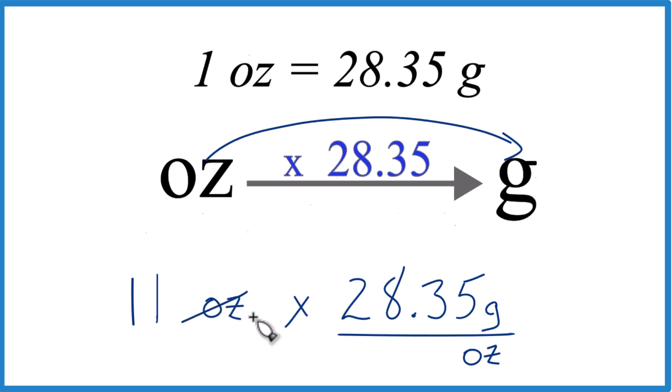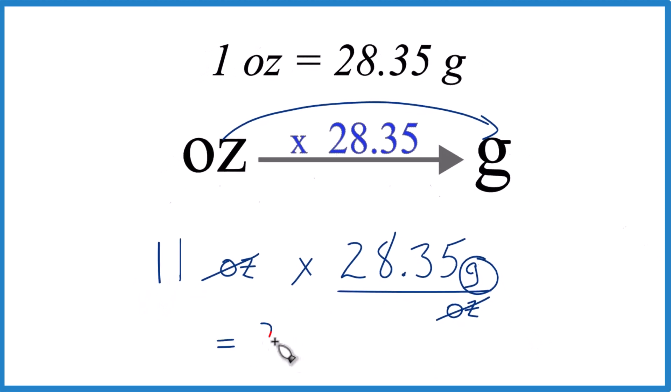When we multiply, we have ounces on top and the bottom cancels out. We're left with grams. So we're just multiplying 11 times 28.35 grams, and we end up with 311.85. I'm going to call it 311.9, and the units are going to be grams.